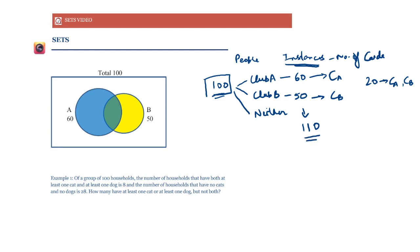How these 110 cards are distributed among the 100 people is normally what our question is concerned with. If 20 people are members of both clubs, those 20 people account for 40 cards — that is 40 instances. So 40 cards are given to these 20 people. The other 70 cards will be given one card each to people who have only one club membership.